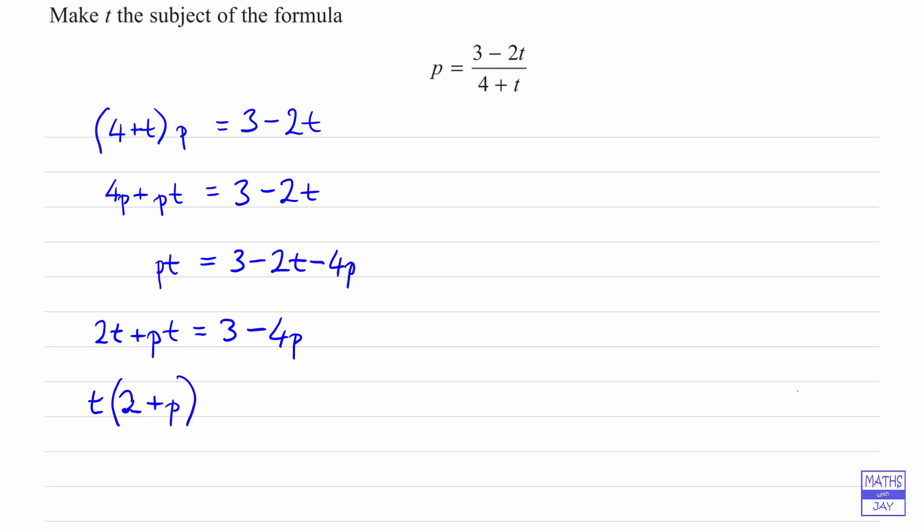So t times 2 plus p will give us 2t plus pt. And we can leave the right hand side as 3 minus 4p.